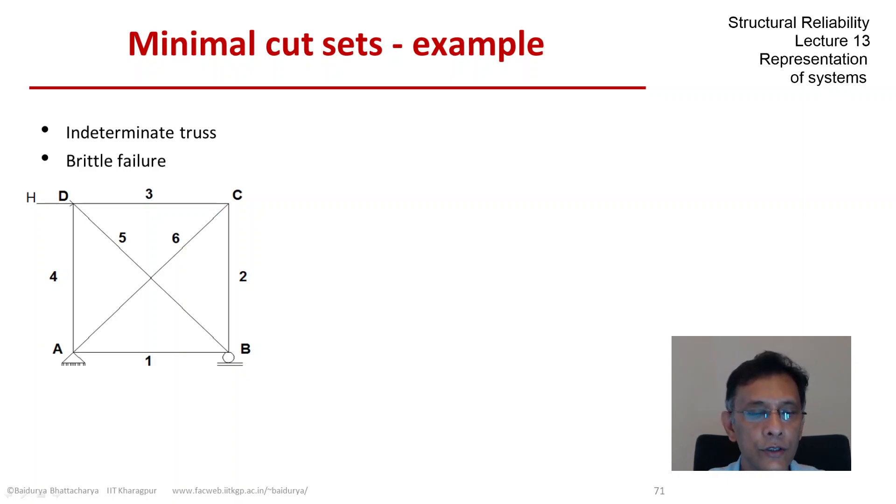In this lecture, there are six elements and we concluded that this is one degree statically indeterminate. So it would be logical to say that any two members would constitute a minimal cut set of this truss structure.